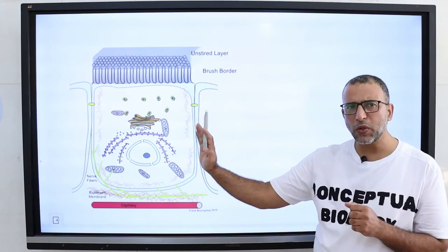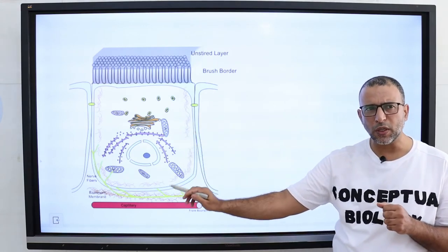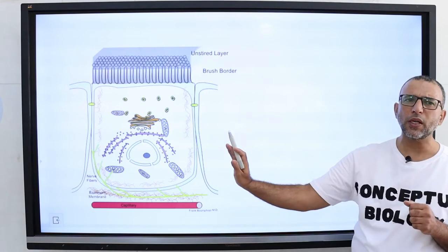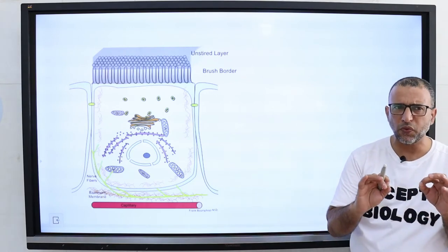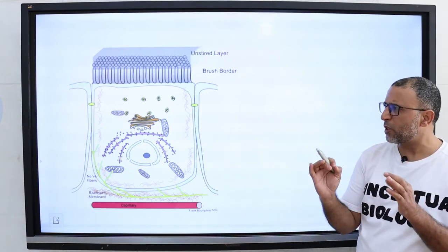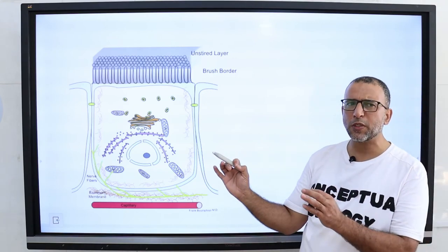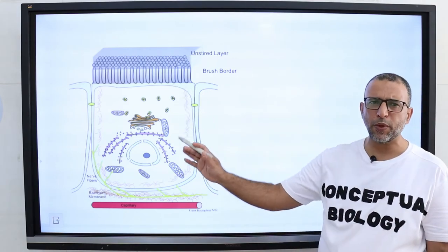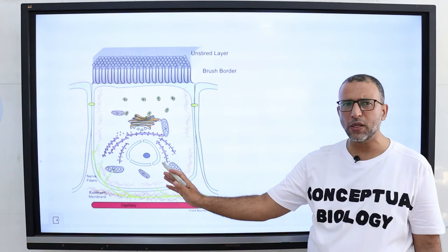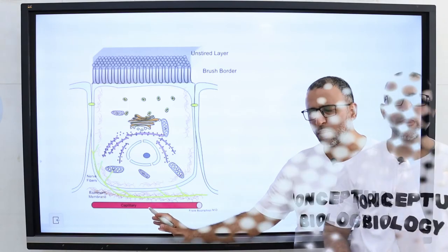Digested food does not directly enter the blood. The sheet of cells acts as a selective barrier, and food substances must be transported across the plasma membranes through the intestinal cells before entering the bloodstream.